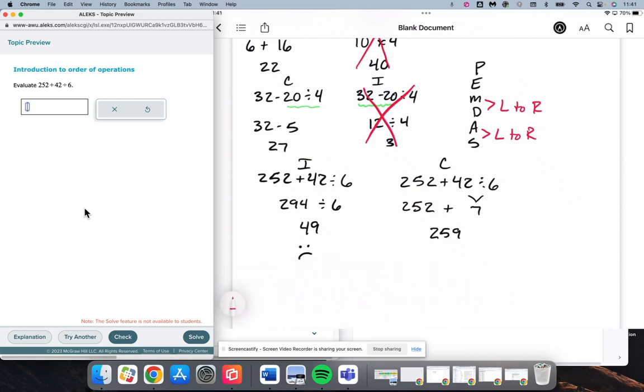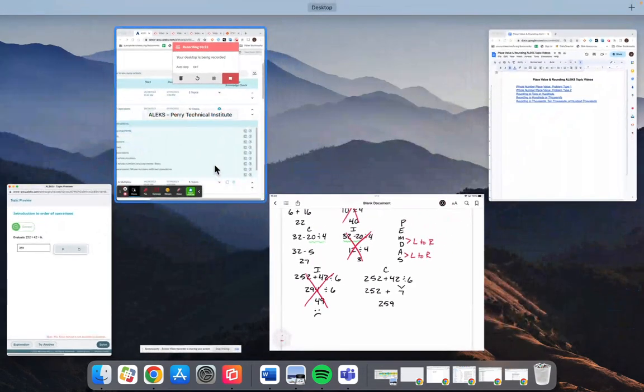So mistakes are going to happen even for someone like me that's done this a ton. That's the incorrect way to do this because that does not follow the order of operations. The correct way is going to produce what we've got over there on the right of 259. That's it for this video. I hope that this is helpful.